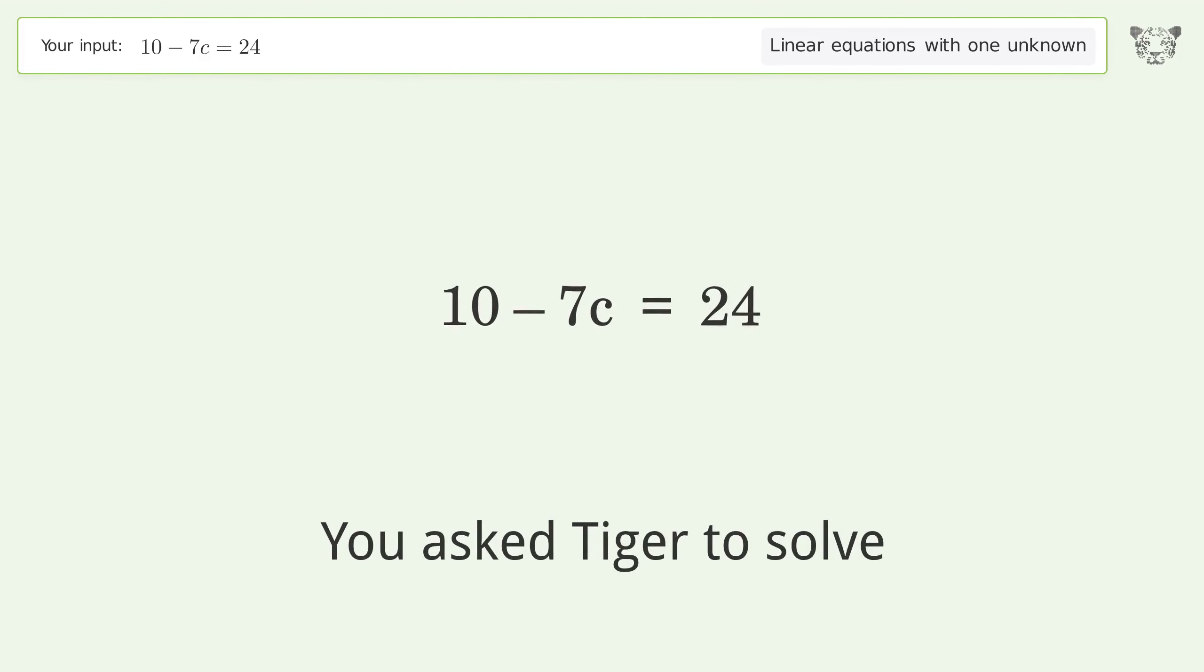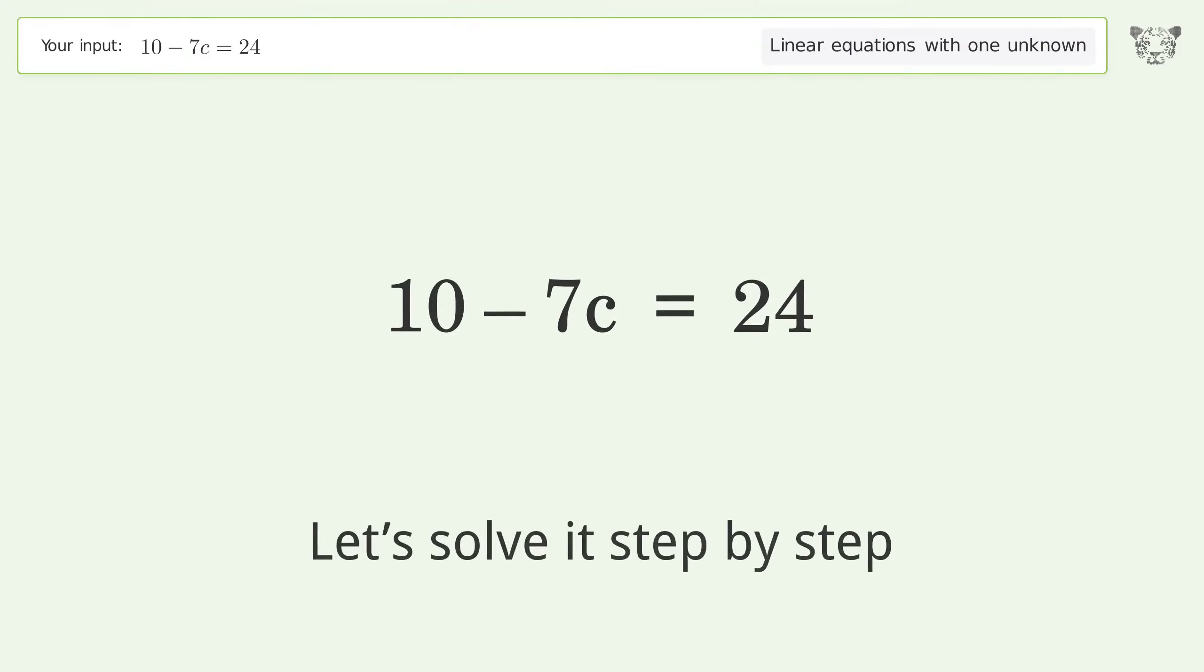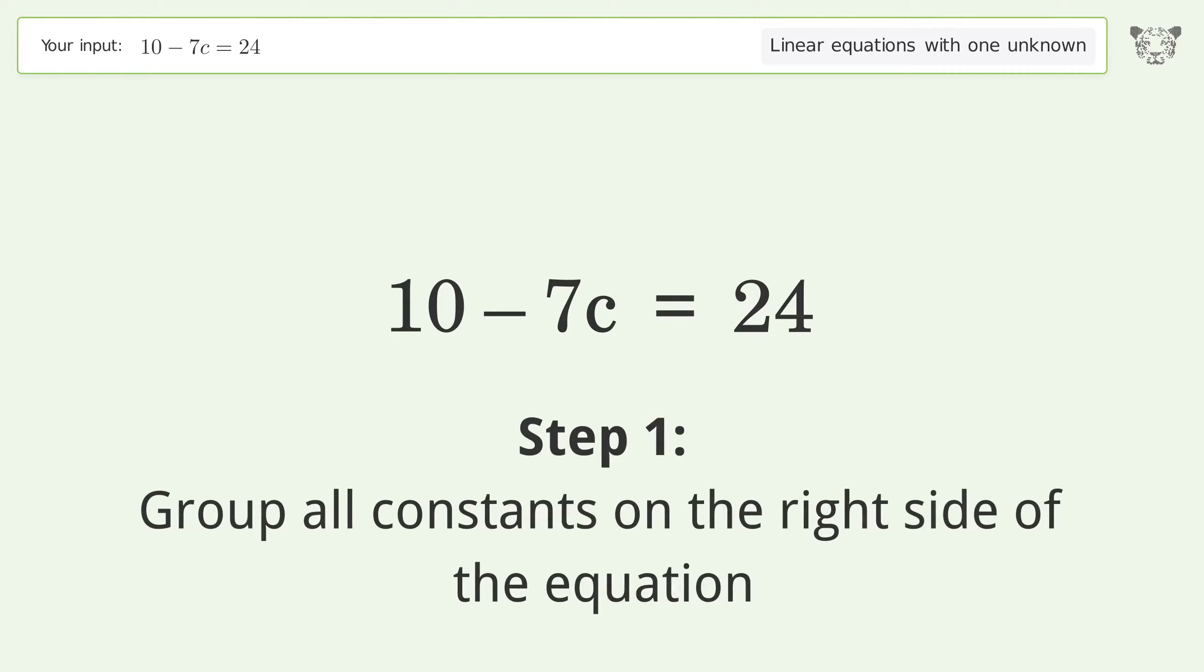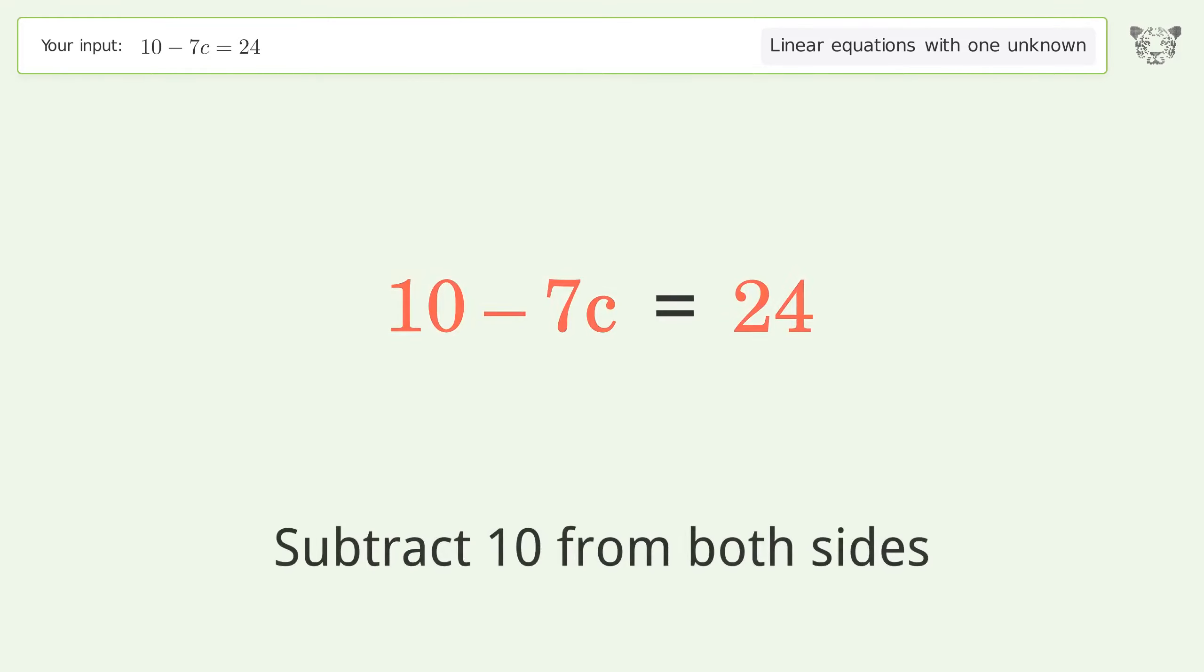You ask Tiger to solve this. This deals with linear equations with one unknown. The final result is c equals negative 2. Let's solve it step by step. Group all constants on the right side of the equation. Subtract 10 from both sides.